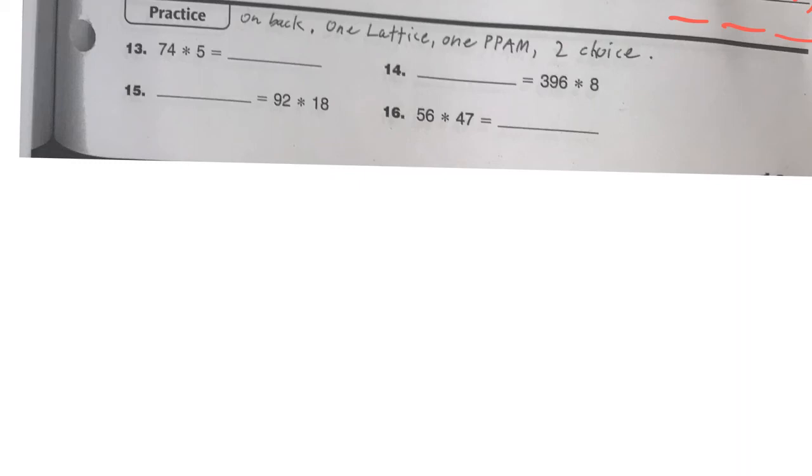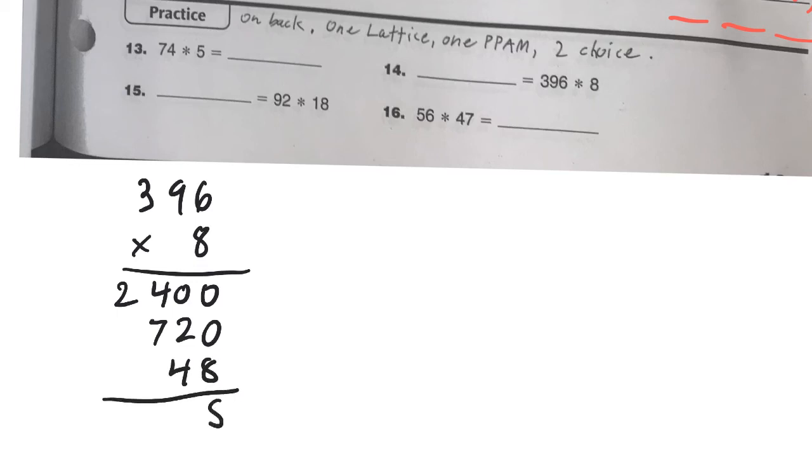I'm going to do number 14 as partial products. I think three digits times one is good for that. And I will go times the hundreds place first. Eight times 300 is 2,400. Eight times 90 would be 720. And eight times six is 48. Now I add those up. And that's my answer for that.